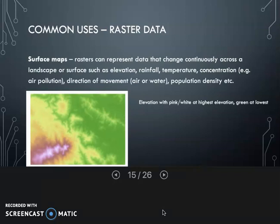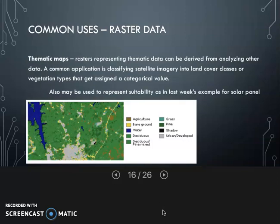It's often used to show continuous environmental variables across landscapes or surfaces, such as elevation, rainfall, temperatures, concentrations of things like air pollution, and other things like that. It's also very commonly used in GIS as land use or land cover datasets.